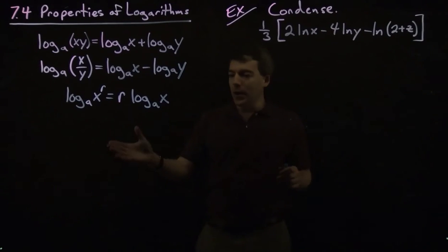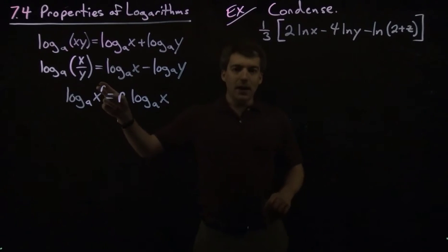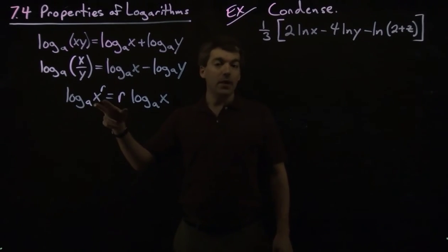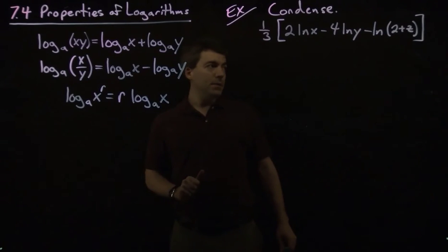When we condense, we'll want to go in the opposite order. We'll want to put coefficients on the exponents of the numbers in the argument of the logarithms, then use these sum and difference properties to combine the logarithms.